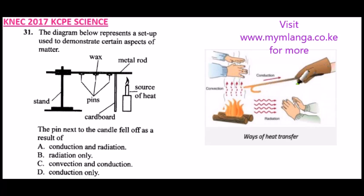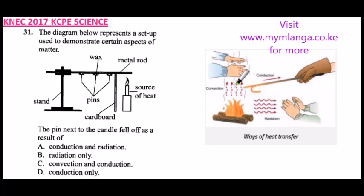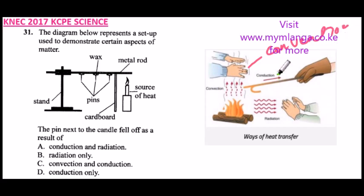If you put an iron rod into the fire, the hot air heats it and heat is transferred along the metal rod — where you are holding it, you'll experience heat. That is conduction. If you put your hands to the side — not directly on top of the fire but aside — you experience heat transferred because of radiation. So this is convection, this is conduction, and this is radiation.